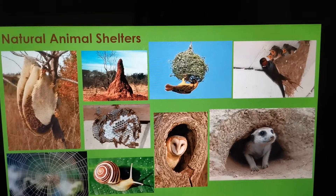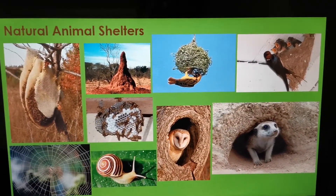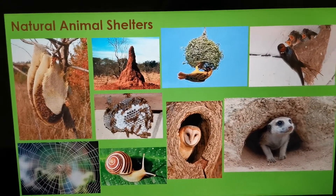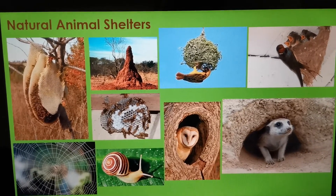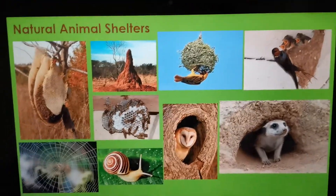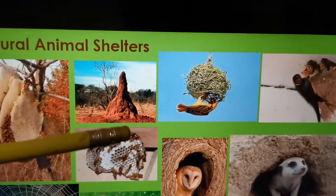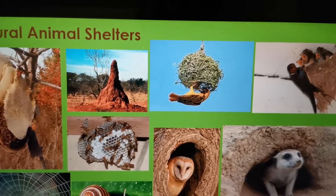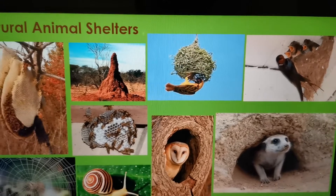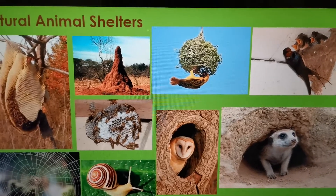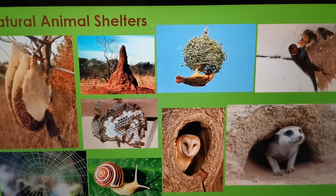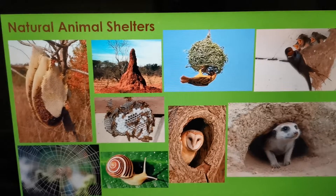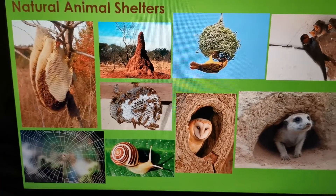Here we have a couple of pictures of Natural Animal Shelters. Natural is formed in nature. We've got a beehive — bees built their own beehive. There we have a termite mound — termites built this mound out of sand and soil. Here we've got a weaver's nest — weavers built their own nests using grass. There we have a swallow's nest — they use mud. We have a meerkat burrow, and they dig this burrow for themselves.